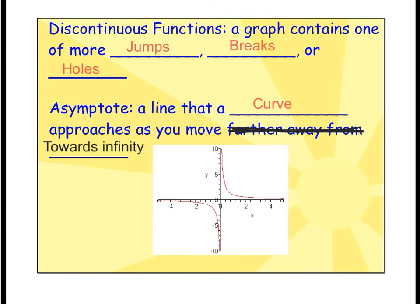A discontinuous function is a graph that contains one or more jumps, breaks, or holes. Rational functions are discontinuous functions. You can see there's two parts to the graph but they're disconnected. There's a gap between them because of those excluded values that we can't have.